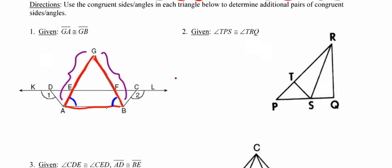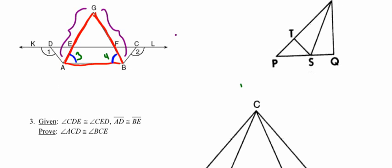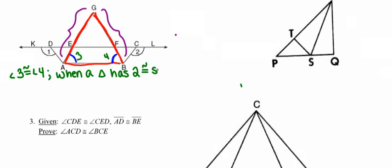I can't name those blue angles angle A and angle B because there are multiple angles A and B in the picture, and I can't call them angles 1 and 2 because those are already used. So I'm going to call them angles 3 and 4, and I know they have to be congruent to one another. The justification is: when a triangle has two congruent sides, the angles opposite those sides are also congruent.